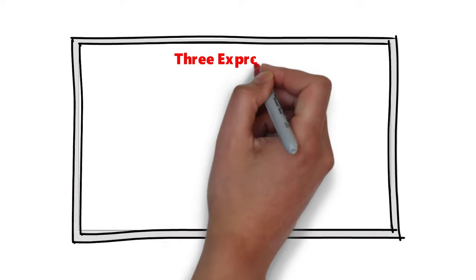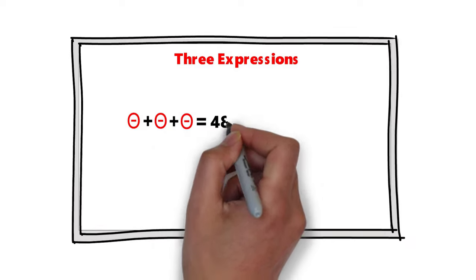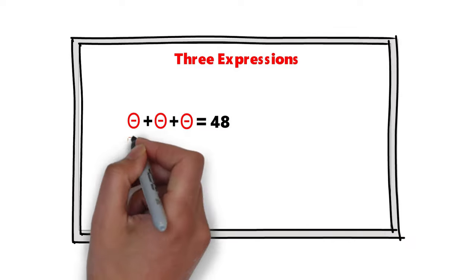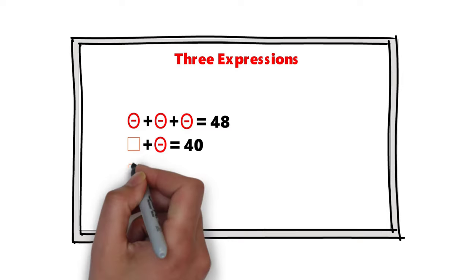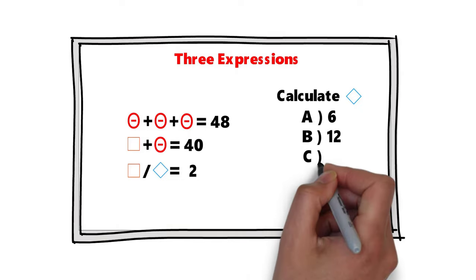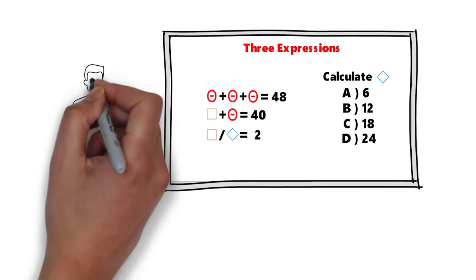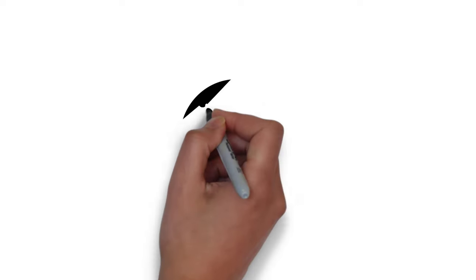Here's a cool question frequently used on tests. You're presented with three expressions: a circle with a dot inside plus another circle plus another circle equals 48; in the second expression, square plus circle equals 40; in the third, square divided by diamond equals some result. You need to calculate the diamond. Choices are A: 6, B: 12, C: 18, D: 24. Give yourself 10 to 30 seconds.